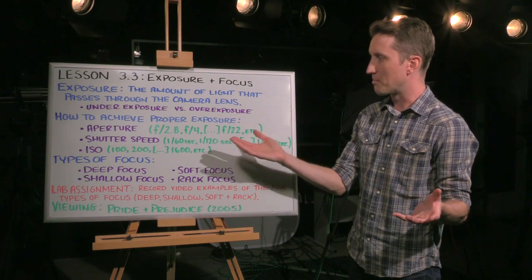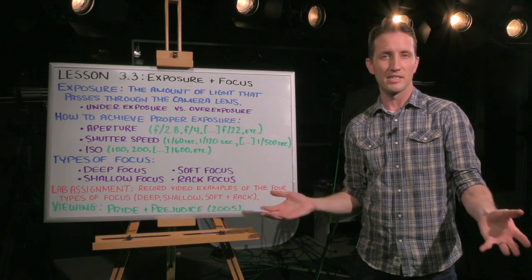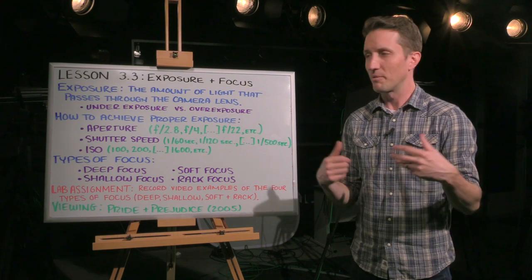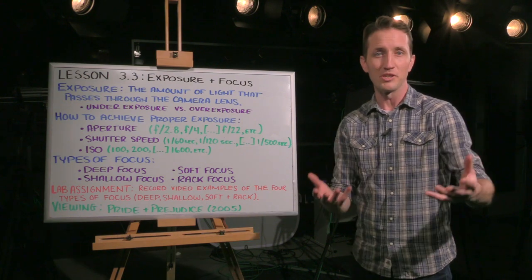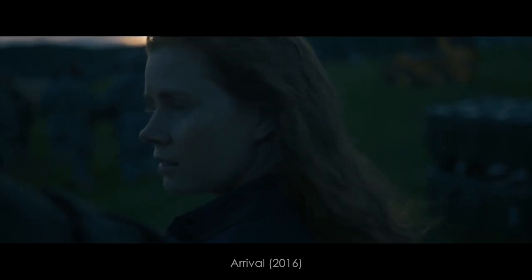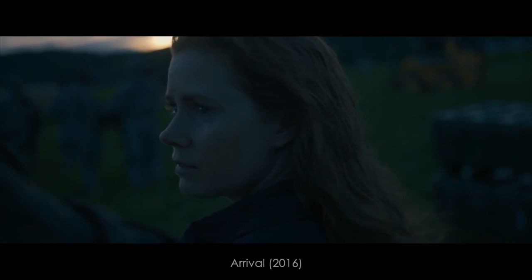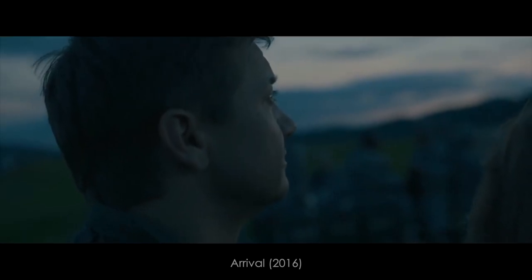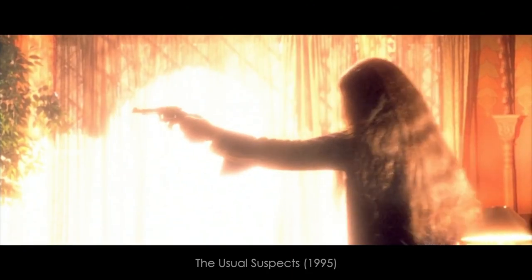Starting off with exposure, the amount of light that passes through the camera lens. In order to get an image on your camera, the camera needs to be properly exposed. And certainly you can have an image that is underexposed, where it's maybe a little darker than normal, or you can have an image that is overexposed, where it's maybe a little brighter than normal.